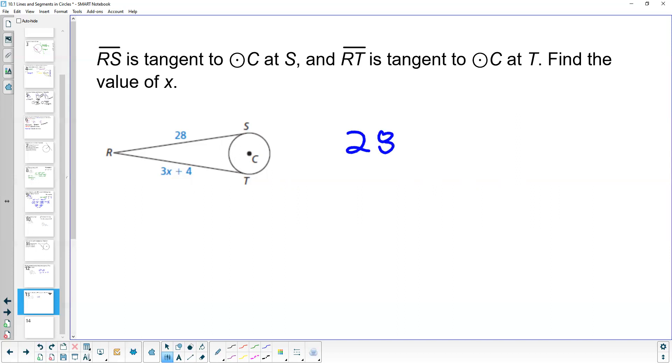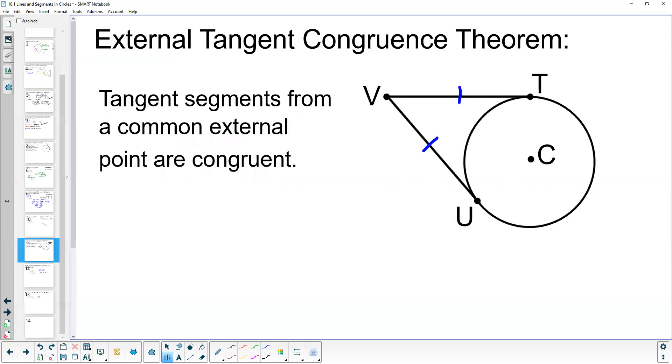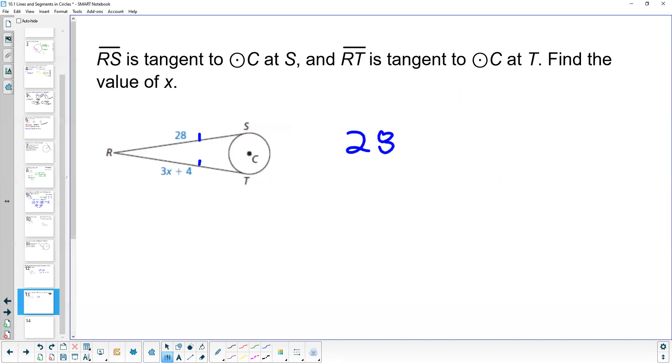We've got 28 for one piece and we know that by our External Tangent Congruence Theorem that this is going to be congruent to this. Meaning 28 is congruent to 3x plus 4, or is equal to, because those two segments are congruent there.